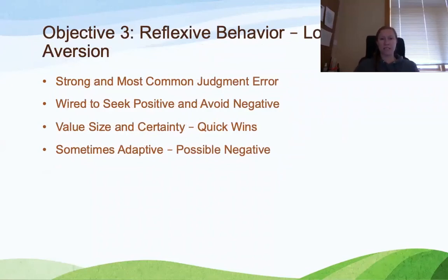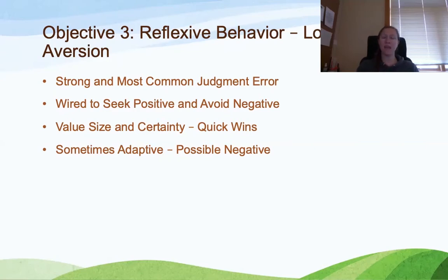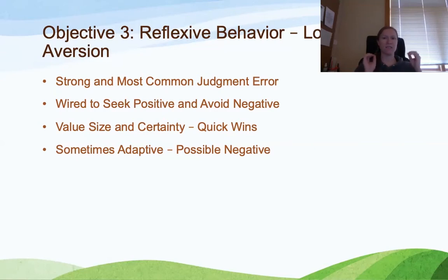Our last objective is about the first set of cognitive biases which are related to loss aversion — those reflexive behaviors related to loss aversion. This is one of our strongest and most common judgment errors because we are wired to seek out positive reinforcement and avoid negative, aversive conditions.